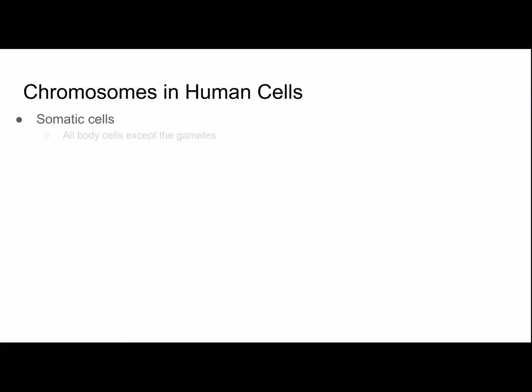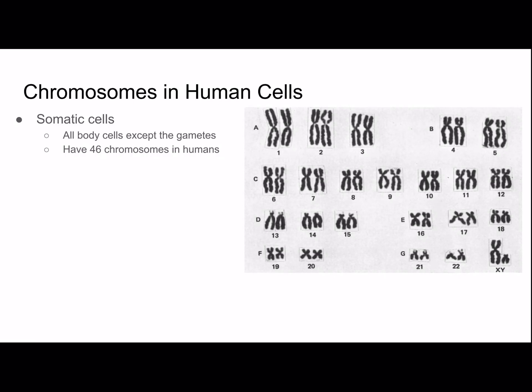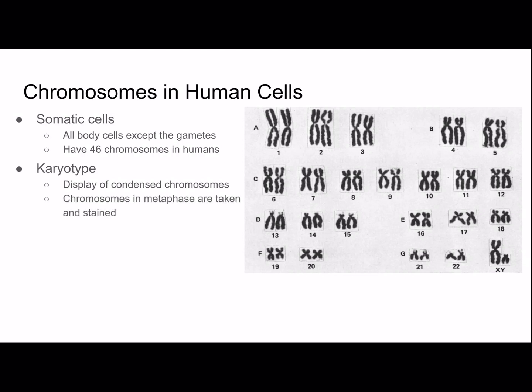Somatic cells are all body cells except the gametes, and they have 46 chromosomes in humans. This is a karyotype, which is a display of condensed chromosomes. Chromosomes in metaphase are taken and stained. I like this picture because you can see the sister chromatids of each chromosome — this was taken as the chromosomes were in metaphase, after replication, which is why there are sister chromatids.